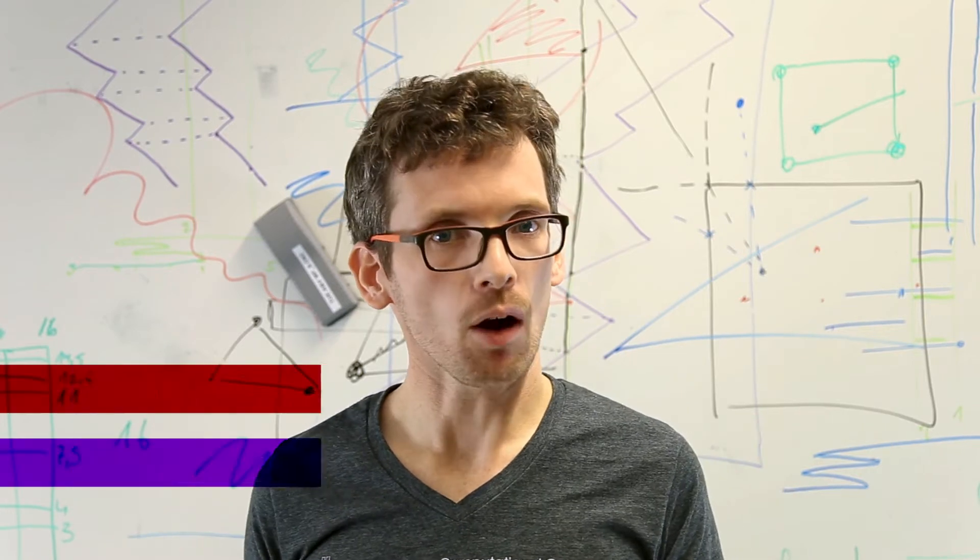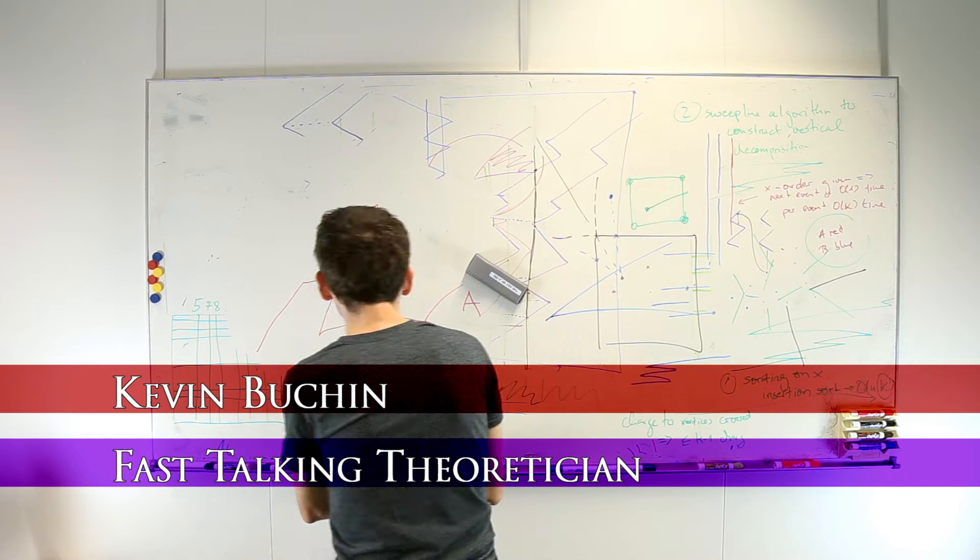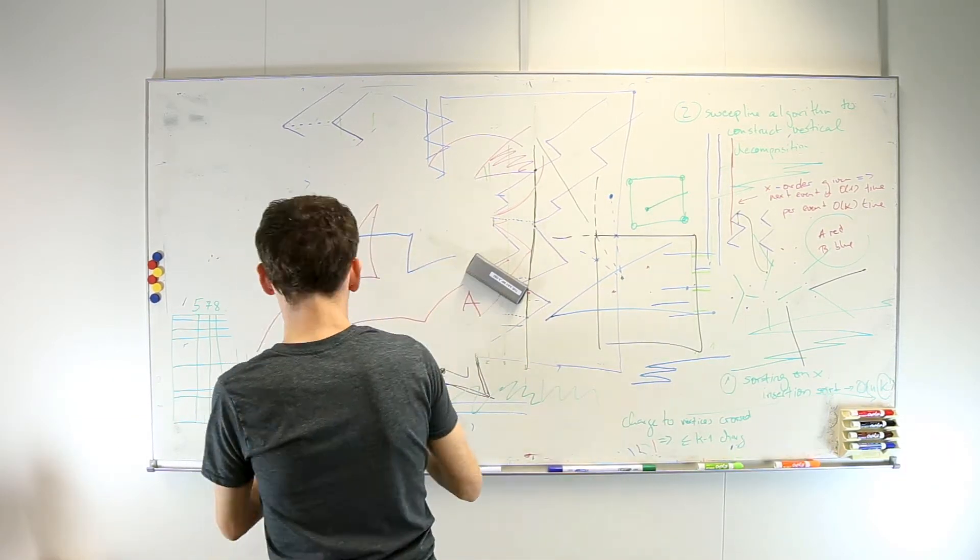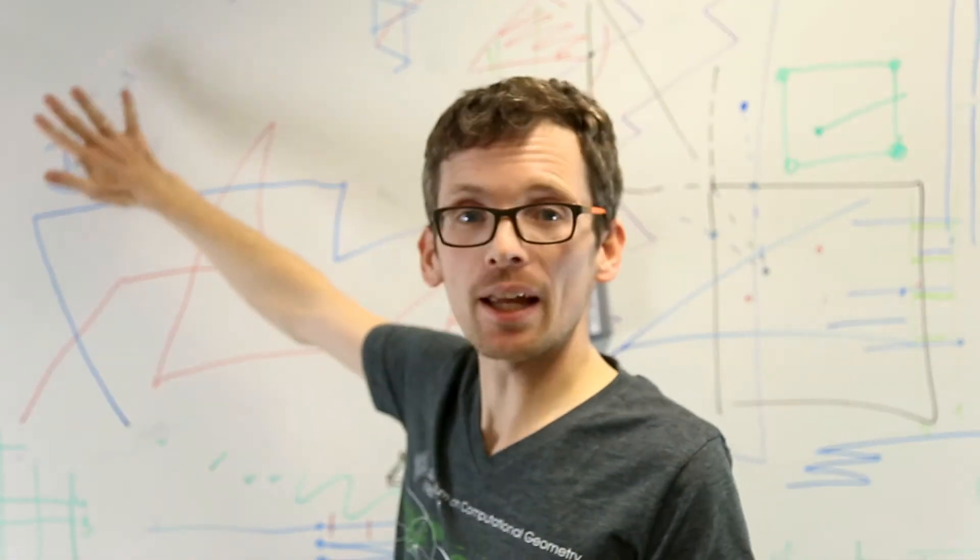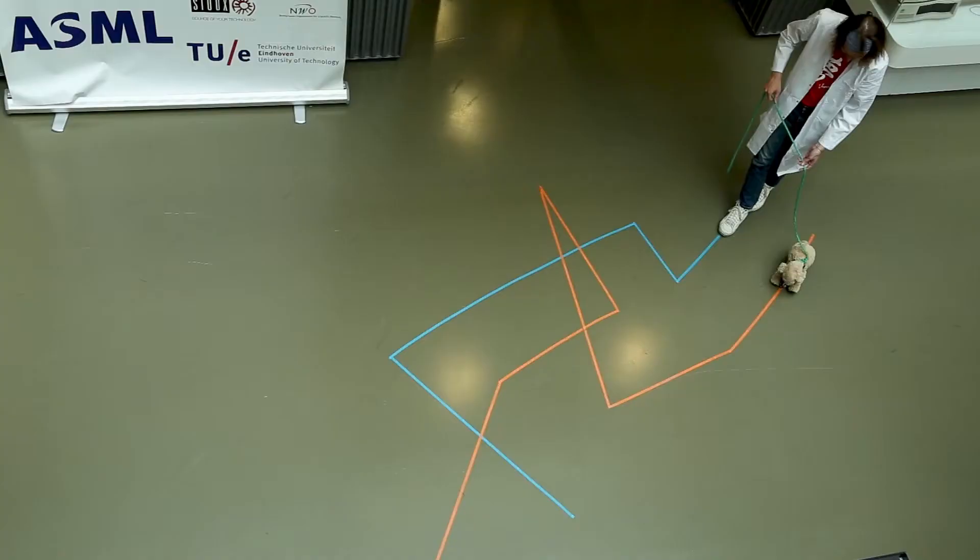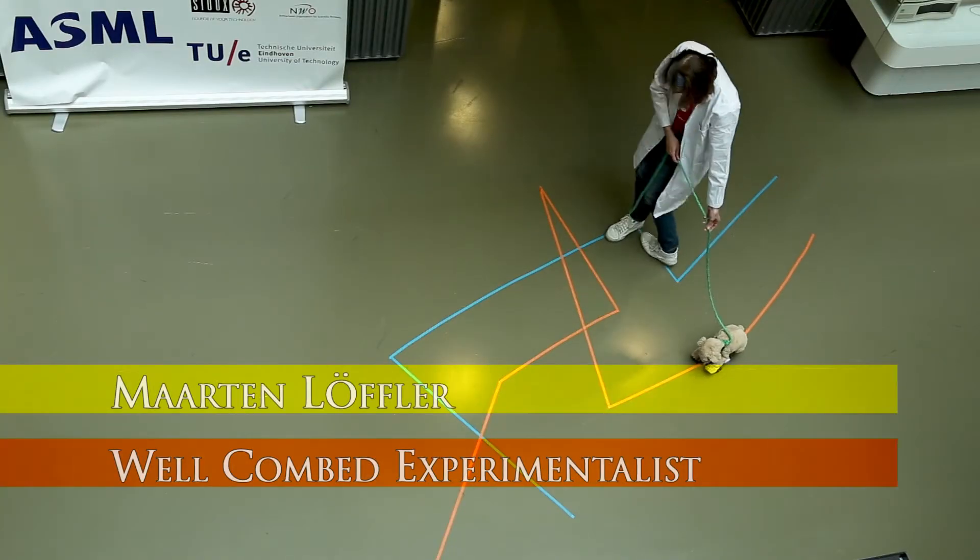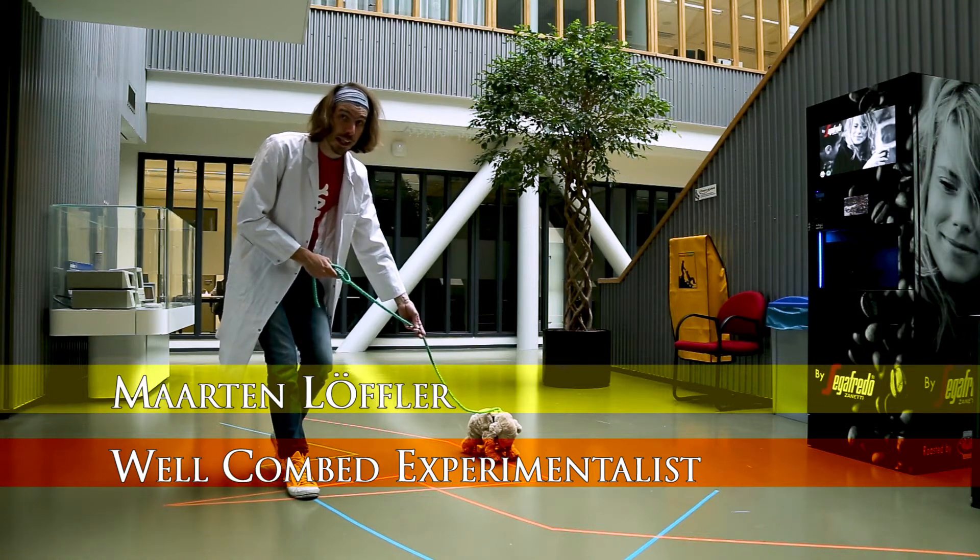The Fréchet distance is a powerful way to measure the similarity between two curves. Suppose we have two curves A and B. Then the Fréchet distance is the maximum distance two points traveling on A and B ever need to be away from each other. It's like the length of the leash.